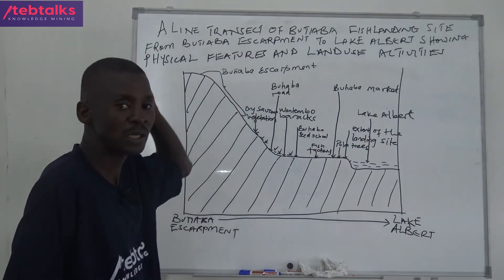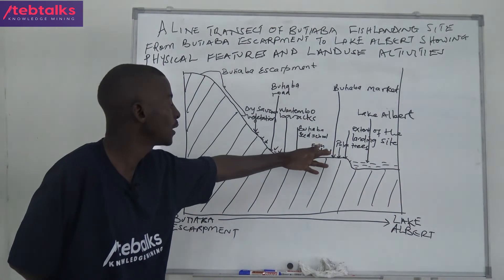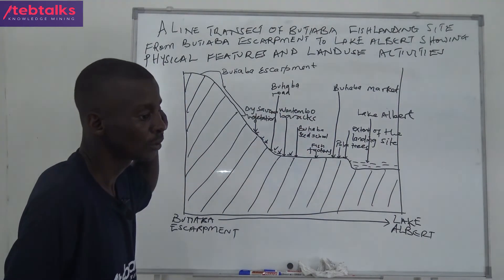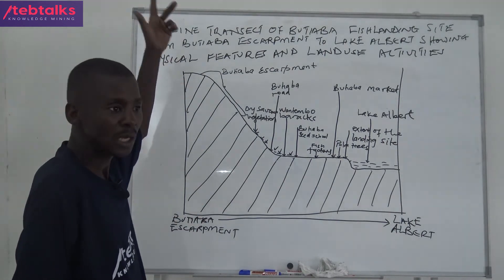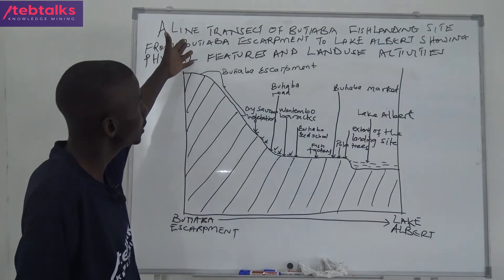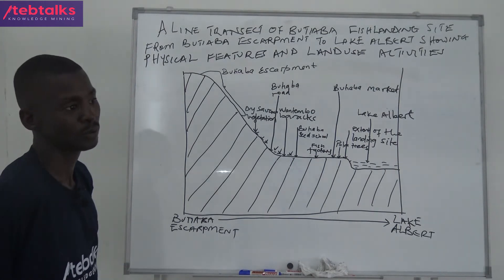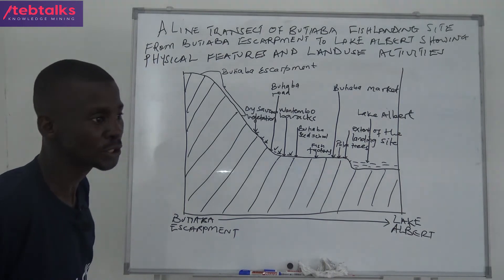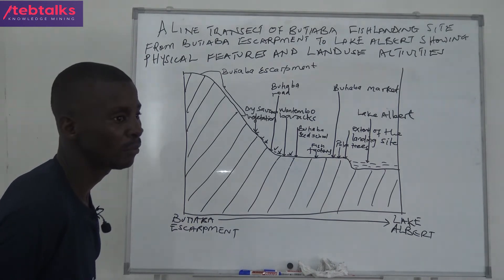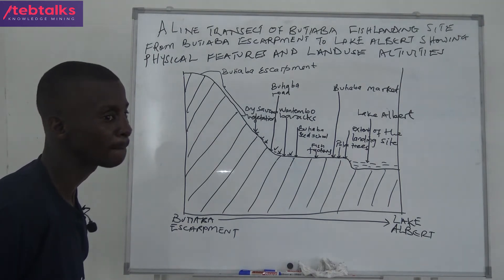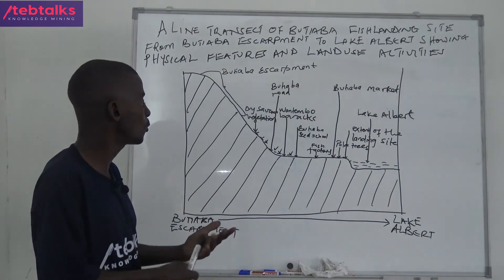But when you actually carry out fieldwork at a place like Tiaba Fish Landing Site, you will notice that the landscape is shaped like this: you enter into a flat land, then go to a low land — and that's how it should be represented. The heading should be in capital letters, or at least align it if in small letters. Drawing should be strictly with a pencil — don't draw using ink. Shading should also not be in ink, but rather in pencil.